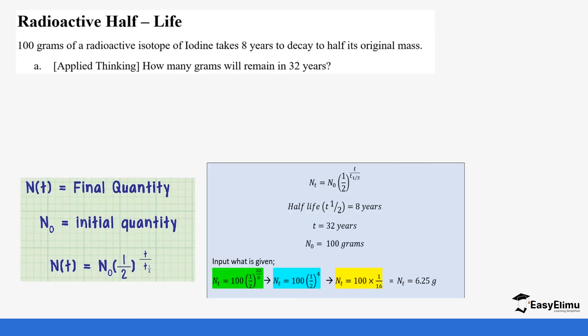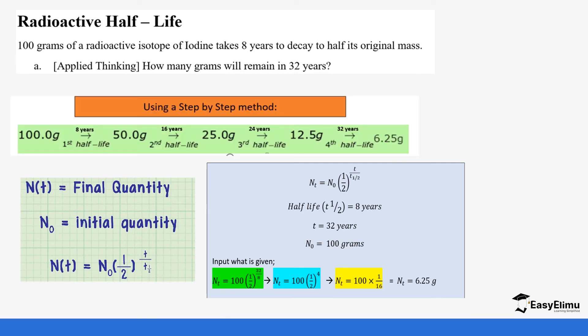There are other ways of calculating half-life. We can use a formula or the direct method. First of all, you are given 100 grams of a radioactive isotope of iodine. It takes eight years to decay to half. This is the half-life. How many grams will remain after 32 years? Using the step-by-step method, you start with 100 grams. After every eight years it divides by half so it becomes 50. After another eight years it becomes 25 grams, so that's 16 years in total. After another eight years it turns to 12.5, that's 24 years in total. After another eight years it becomes 6.25 which totals 32 years.